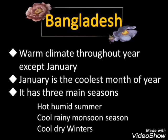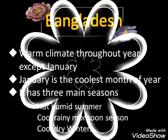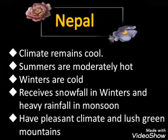Bangladesh has a warm climate throughout the year, except January, which is the coolest month. It has three main seasons: the hot humid summer, a cool rainy monsoon season in which Bangladesh receives heavy rainfall, and a cool dry winter that decreases the temperature to a moderate level. Devastating cyclones are also very common.